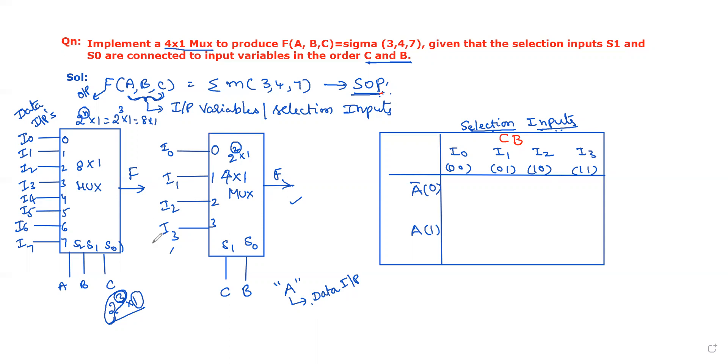To find these data inputs, let us draw one table. In this table, we mention the selection inputs on one side and the missing variable as data input on the left side. Now we should find the min-term numbers at each level of ABC in this table. First, let us write ABC according to the given Boolean expression in proper order.